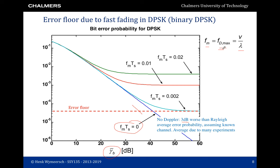The other curves for non-zero Doppler shift all have what is called an error floor. This means that no matter how high the SNR gets, the bit error rate cannot go below a certain limit. When the maximum Doppler increases, this error floor goes up. For very high velocity, performance will be limited by the Doppler shift. When the Doppler shift tends to infinity, the bit error rate will be limited to about 0.5, meaning half of the bits will be wrong.